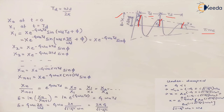Let's assume the maximum amplitude for this system is x. The maximum amplitude would have been constant, but now it is decreasing. In the first case, when time is equal to 0, the amplitude is x0. In the second case, when time is equal to TD, what is x1?